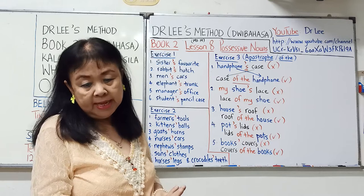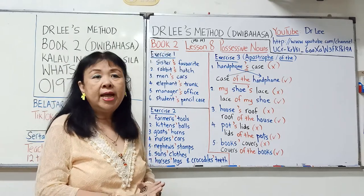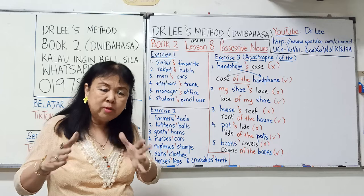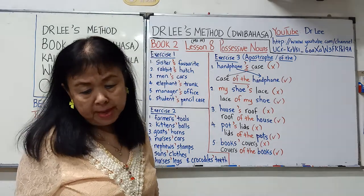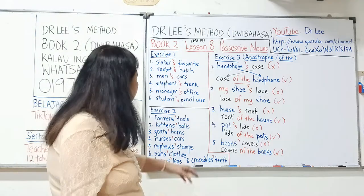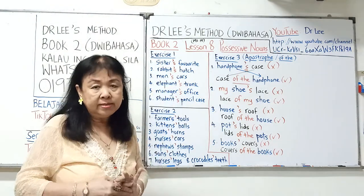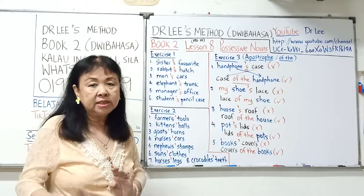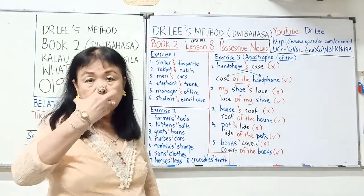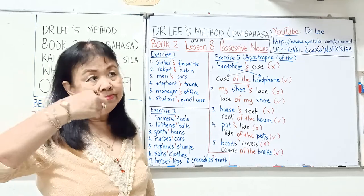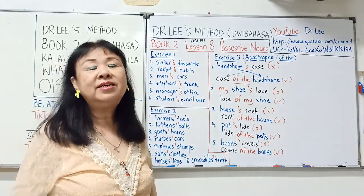Rabbit's hutch: 'This is our pet rabbit's hutch.' Hutch adalah rumah yang kita bina untuk rabbit. 'Those man's skulls are packed behind the stadium.' Man's — ingat, M-A-N, M-E-N, apostrophe S. Jangan S apostrophe. Elephant's trunk — trunk adalah hidung gajah. 'The elephant's trunk is very long.'